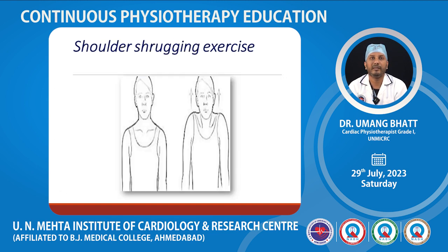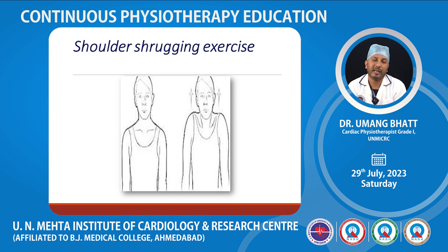Shoulder shrugging exercises are also important and can be performed independently. These exercises strengthen the scaleni and upper trapezius muscles. In later stages, the therapist can apply resistance against the shoulder shrug to further strengthen the muscles, adjusting pressure according to the patient's strength.